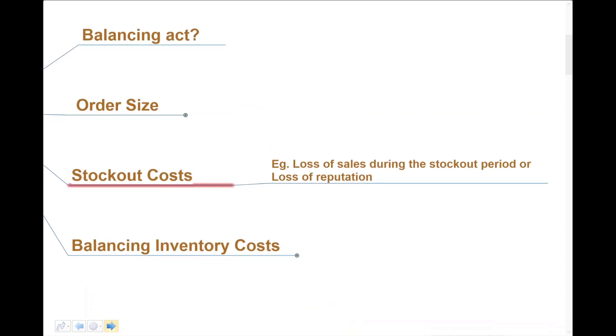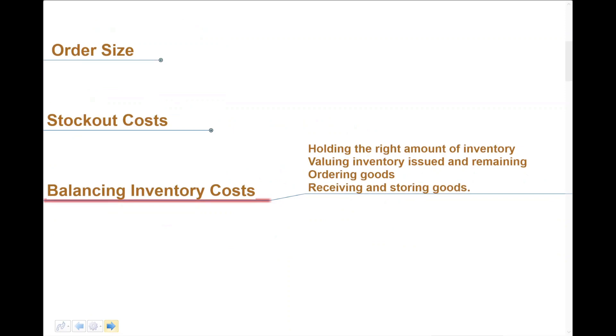Let's refer to stock-out costs. Basically, loss of sales. We don't need loss of sales just because we can't manage our inventory correctly. Linked into that, if we lose sales, we lose reputation, which means more lost sales—it's a vicious circle. Stock-out costs are a problem. The bottom line is that we need to balance these inventory costs out. We need to hold the right amount of inventory, value inventory issued and remaining accurately, order from the right people in the right way, and have facilities and procedures for receiving, storing, and handling our inventory correctly.